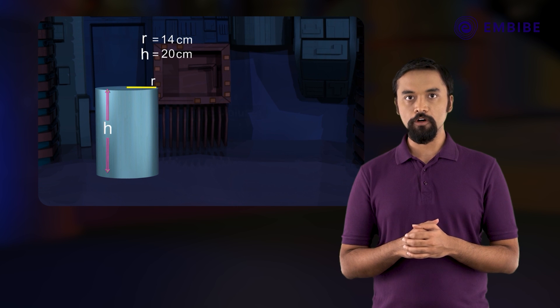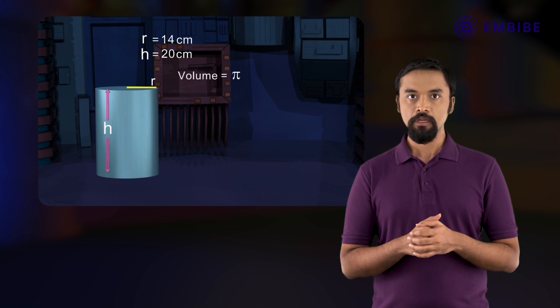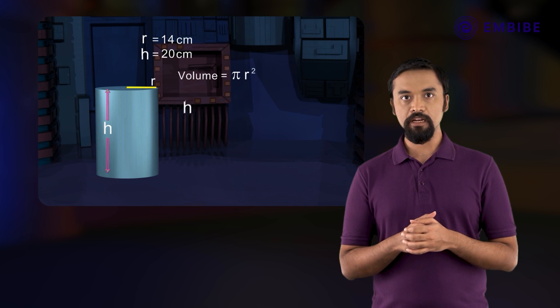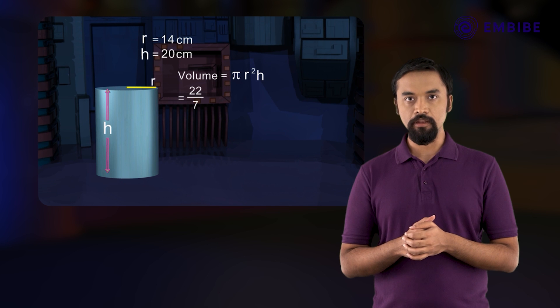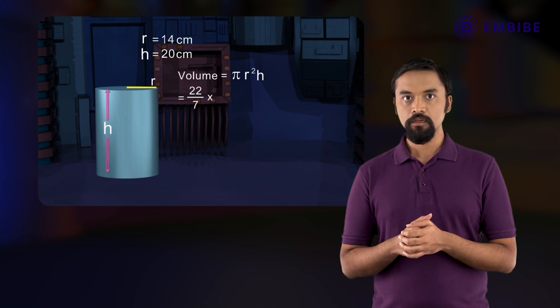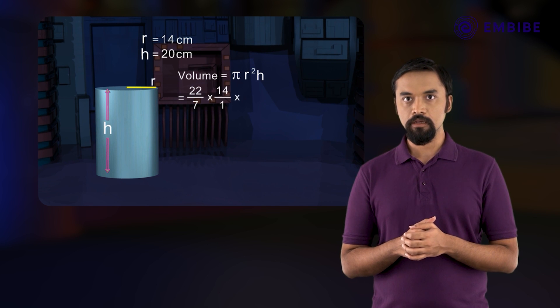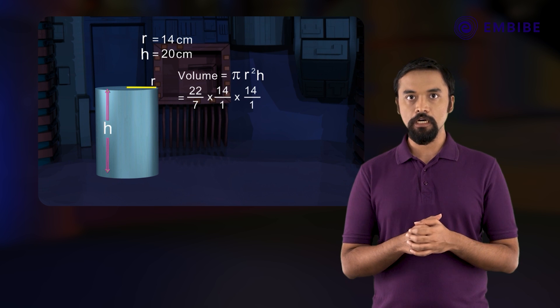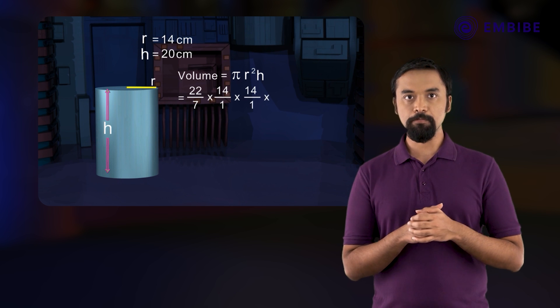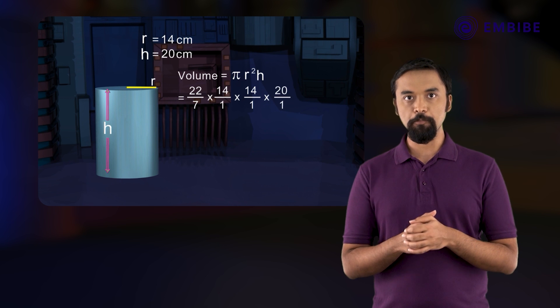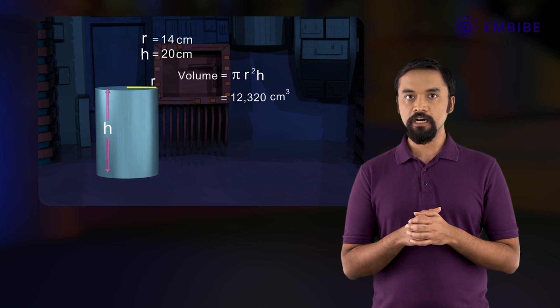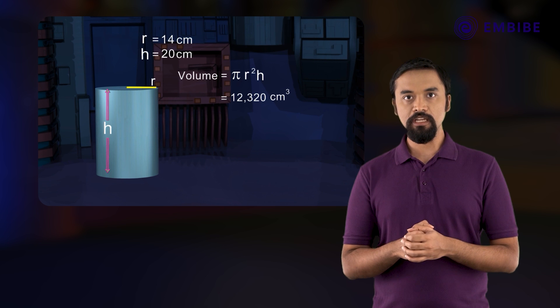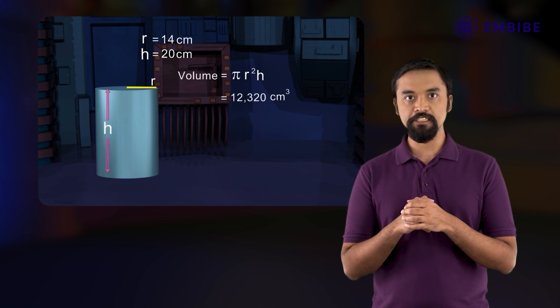Volume of the cylinder is equal to π r squared h, which equals 22/7 multiplied by 14 multiplied by 14 multiplied by 20, which equals 12,320. Answer: 12,320 centimeter cubed.